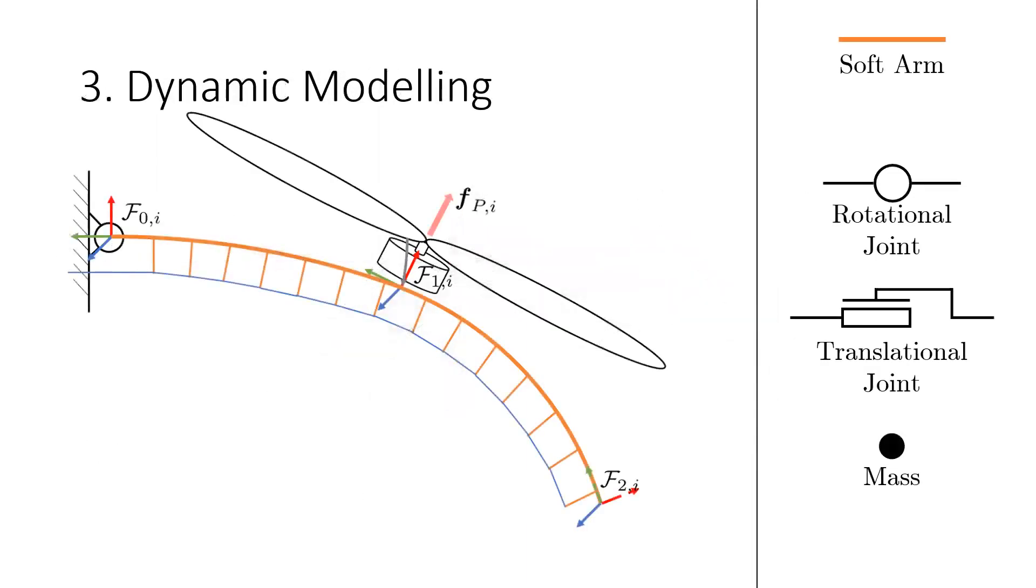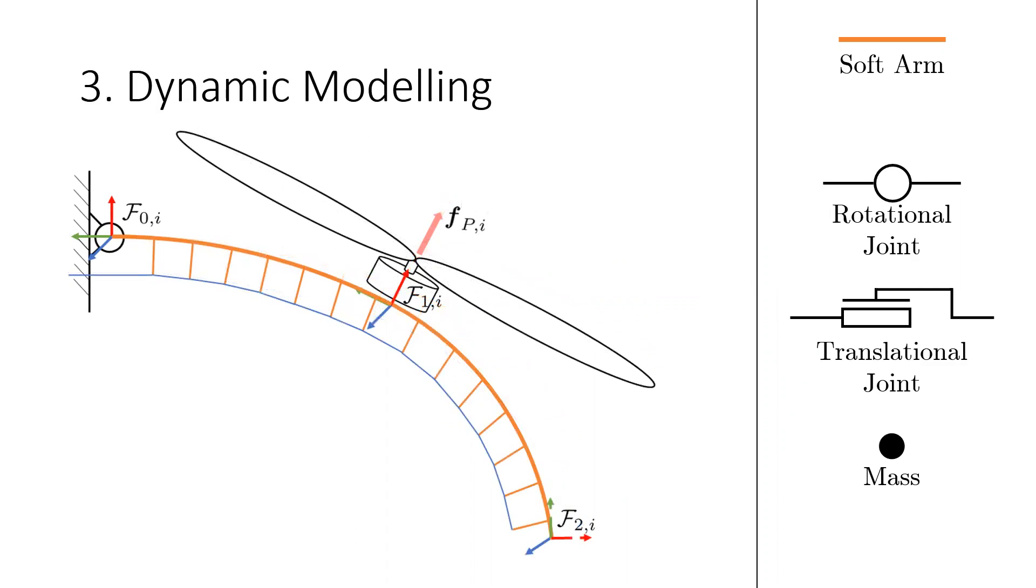Every soft arm is equipped with a motor-driven tendon, here drawn in blue, that can change the deflection of the soft arm. The force of the propeller causes an additional deflection of the arm.